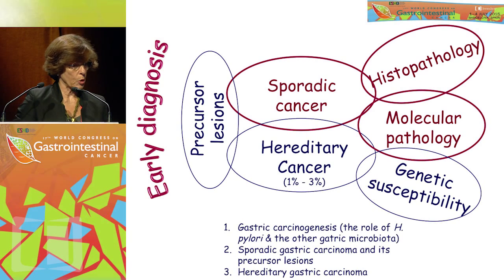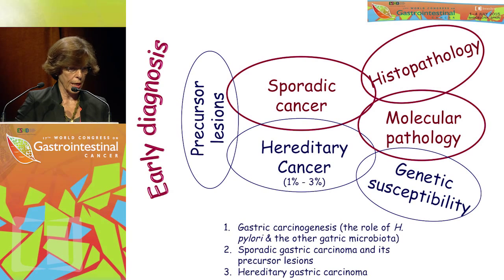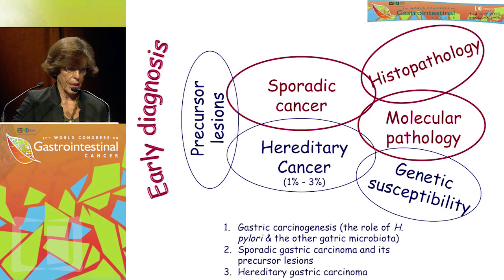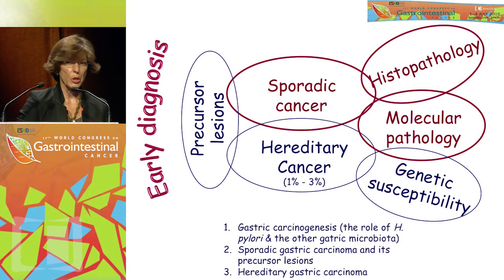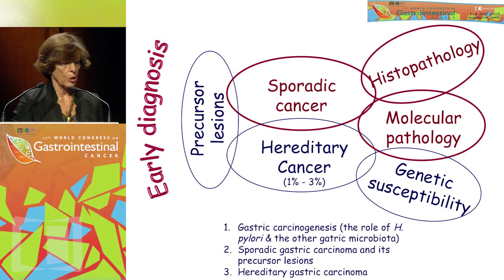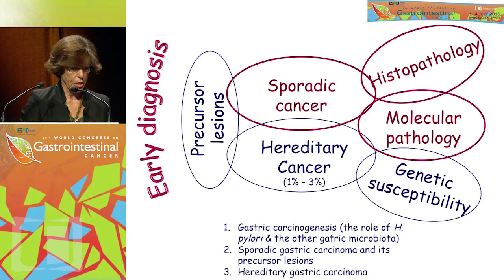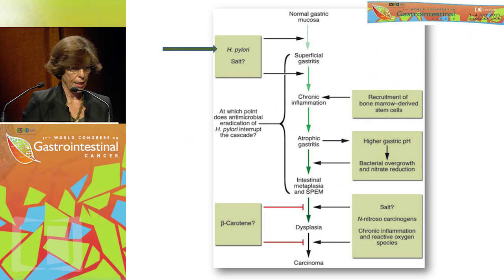What I'm going to do today is go briefly through two major settings of gastric cancer: gastric cancer developing in the sporadic setting, and shortly about hereditary gastric cancer. Behind these two types we have the precursor lesions, and if we want to interfere with the burden of gastric cancer worldwide, we have to develop better means for early diagnosis. I will address gastric carcinogenesis, sporadic gastric carcinoma, precursor lesions, and hereditary gastric carcinoma.